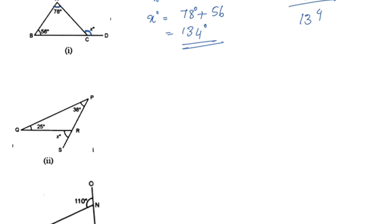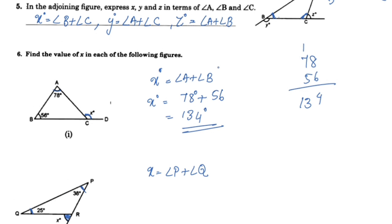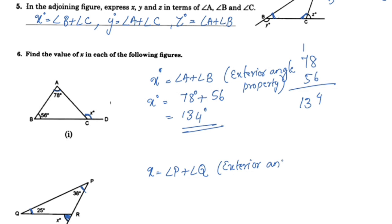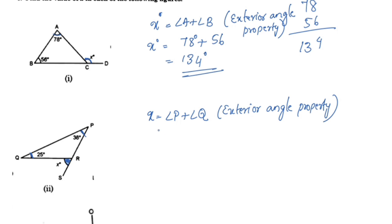For the next figure, using the exterior angle property: X is equal to angle P plus angle Q. Angle P is 38 degrees and angle Q is 25 degrees. 38 plus 25 equals 63 degrees. So X is equal to 63 degrees.